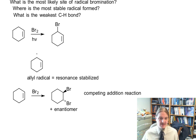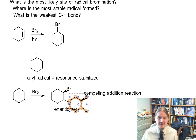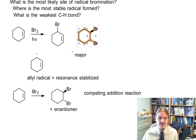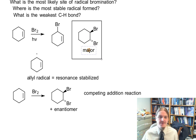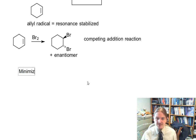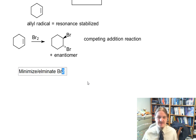In that regard, even under radical conditions, the addition product might still actually be the major product isolated. But if we really want to get the radical product and not the addition product, we need to do something different. And what we want to do is minimize or eliminate the presence of bromine.